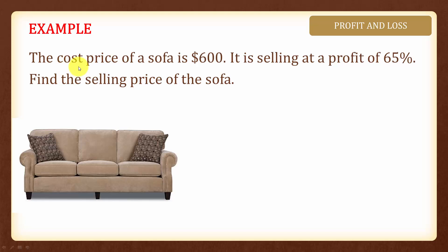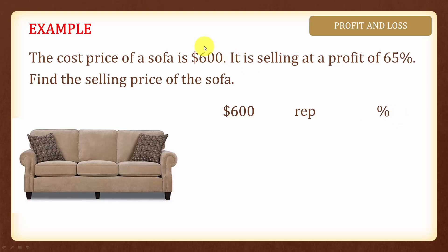In this example, the cost price of the sofa is $600 and it is selling at a profit of 65%. Find the selling price of the sofa. We will start with the given price of $600 and determine how many percent this represents. Since $600 is the cost price, it represents 100%, which is the original price.